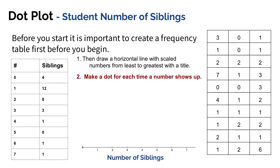The second step is to make a dot for each time a number shows up. For zero I had four people answer that, so I'm going to create four dots vertically stacked on top of each other above the zero. For one I'm going to do twelve dots, and I'm going to try to be careful to make my dots spaced the same amount apart to be consistent. I'll continue making dots until I've done the entire number line.